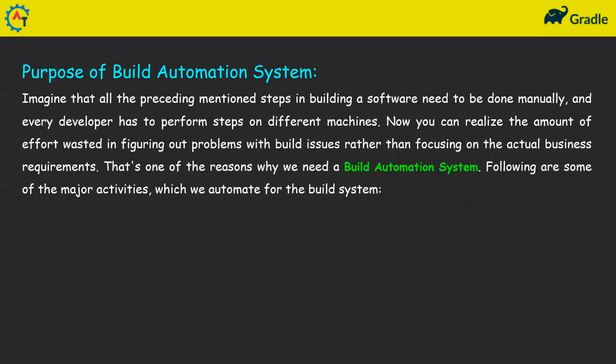Imagine that all the steps in building a software — compiling source code, packaging, attaching dependency files, deploying the software — need to be done manually. Every developer has to perform these steps on different machines. You can realize the amount of effort wasted in figuring out build issues rather than focusing on actual business requirements. This is one of the key reasons why we need a build automation system.